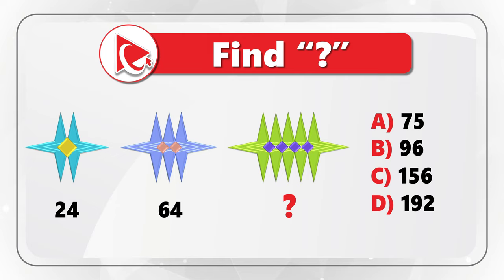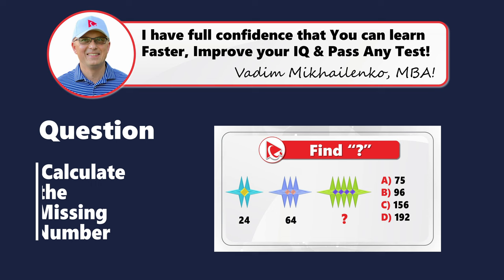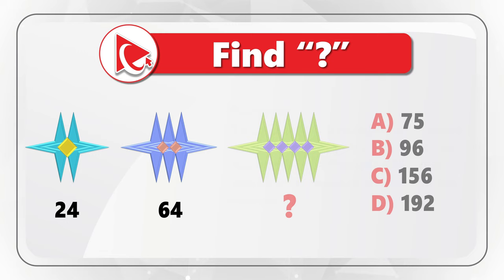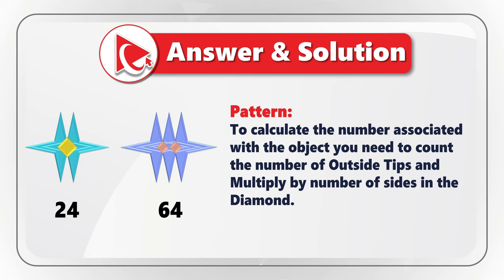Take a close look to see if you can answer the question. This question is actually very simple, so I'm moving forward to share with you my version of the answer. As you might have guessed, the number is calculated based on the number of tips of the stars and number of sides of the diamonds available in each object.